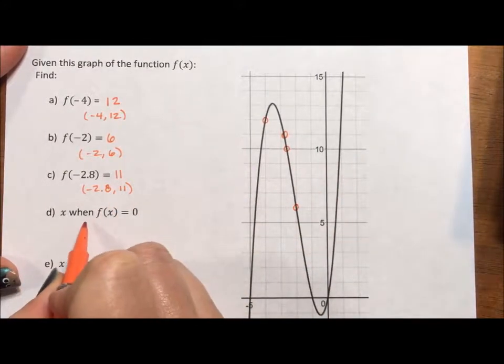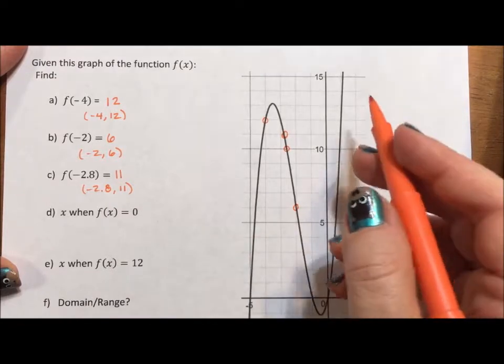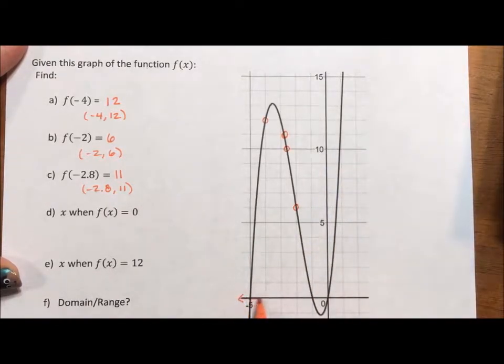Now this says find x when f of x equals 0. That means y is 0. Well, y is 0 all along this line. Well, y is 0 here, here, and here.